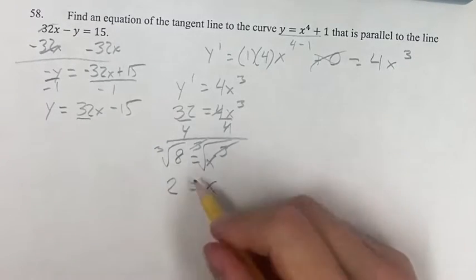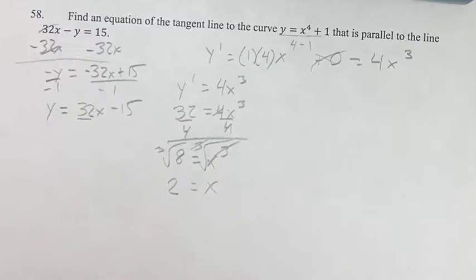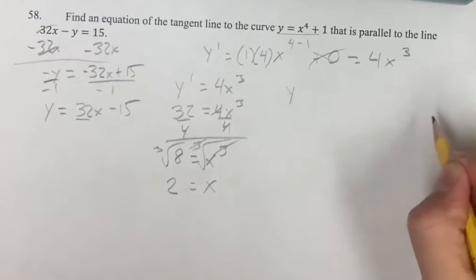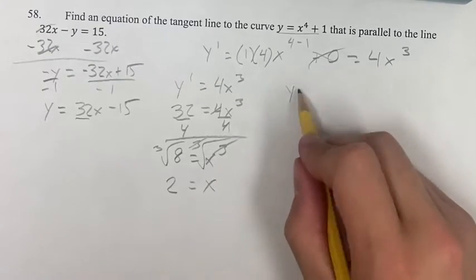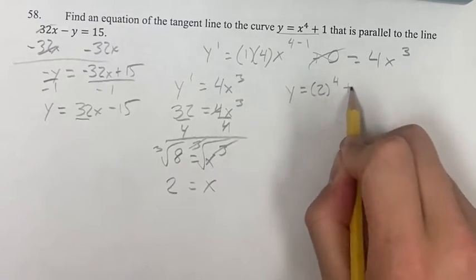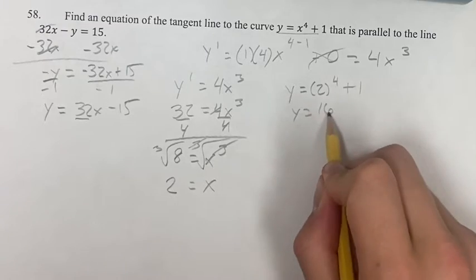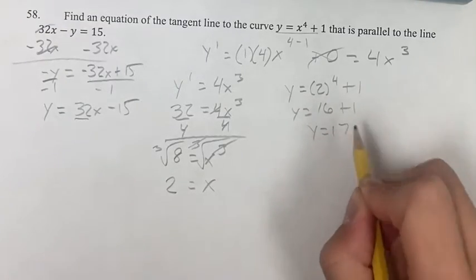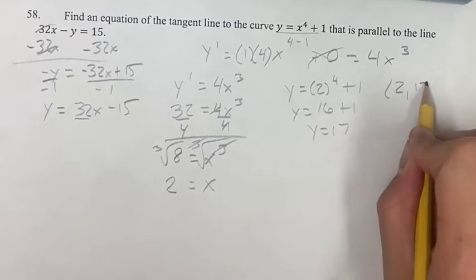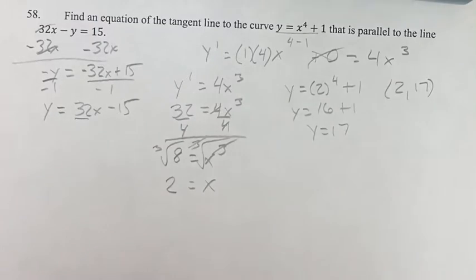So, what do we know here? We know that the x value of the point on this line is going to be 2. What is that point? Well, we know that we can find the y value by plugging in 2 to the 4th plus 1 equals 16 plus 1 equals 17. So, (2, 17) is a point that this tangent line goes through.